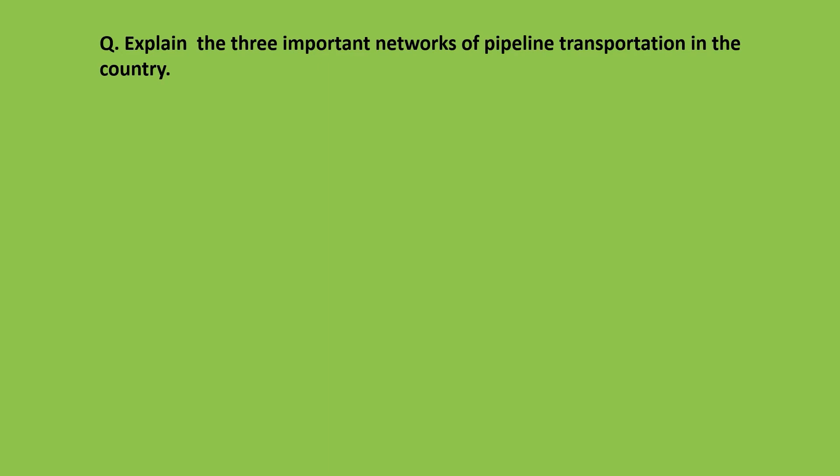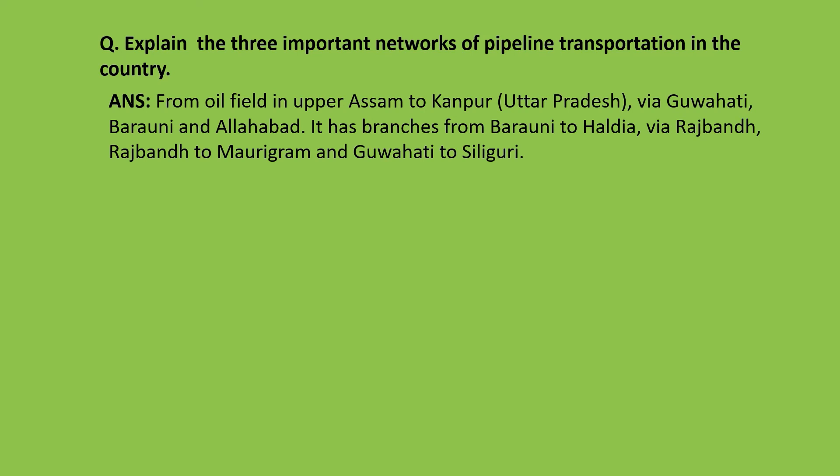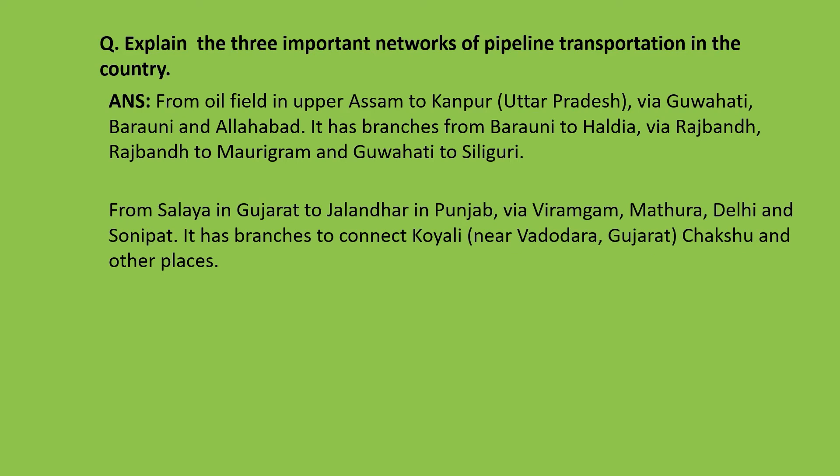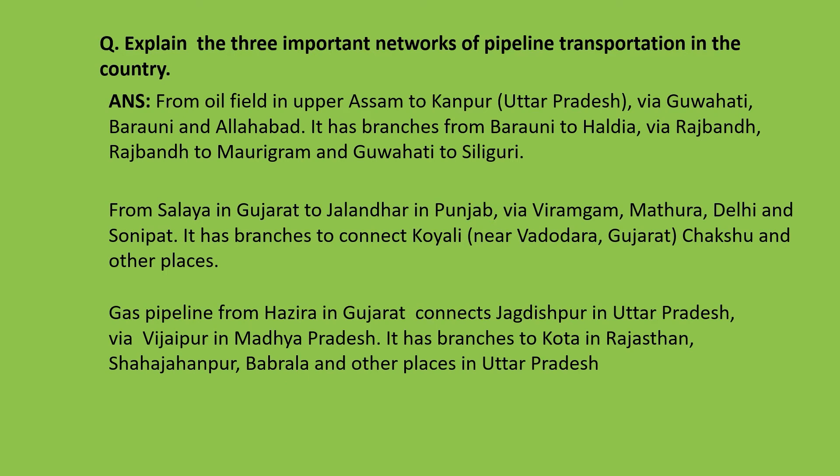Explain the three important networks of pipeline transportation in the country. First: from oil fields in upper Assam to Kanpur via Guwahati, Barauni, and Allahabad, with branches from Barauni to Haldia via Rajbant, Rajbant to Maurigram, and Guwahati to Siliguri. Second: from Salaya in Gujarat to Jalandhar in Punjab via Viramgam, Mathura, Delhi, and Sonipat, with branches connecting Koyali, Chasu, and other places. Third: gas pipeline from Hazira in Gujarat connecting Jagdishpur in Uttar Pradesh via Vijaypur in Madhya Pradesh, with branches to Kota in Rajasthan, Shahjahanpur, Babrala, and other places in Uttar Pradesh.